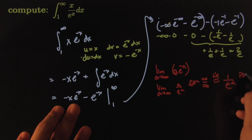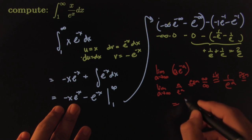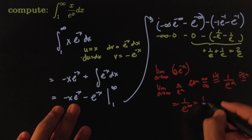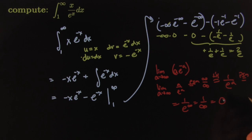Then I try the plug-in method again. That becomes 1 over e to the infinity, which becomes 1 over infinity, which becomes 0.